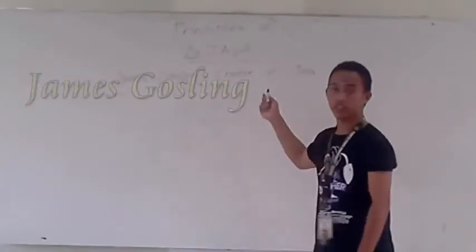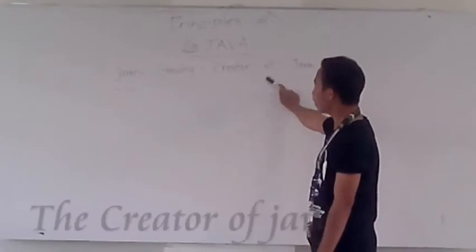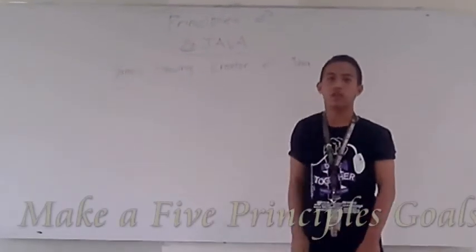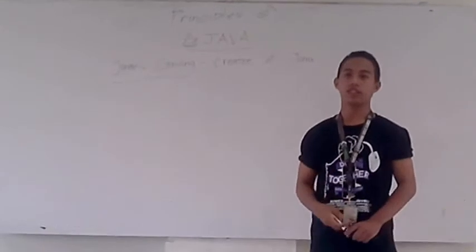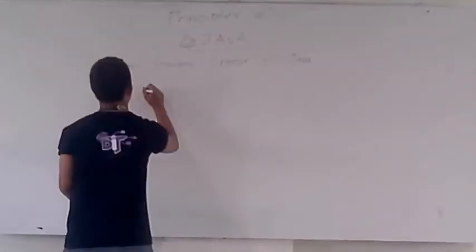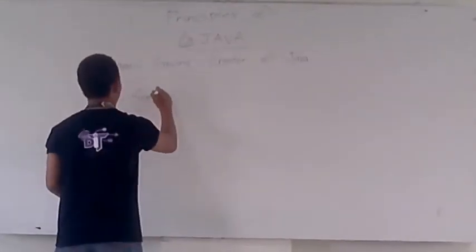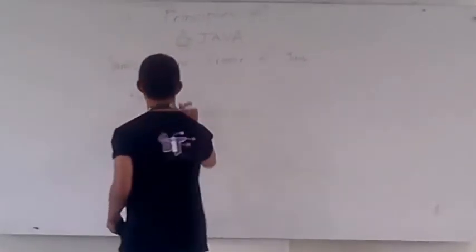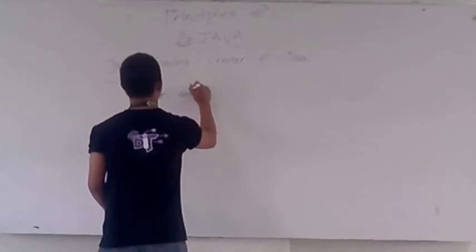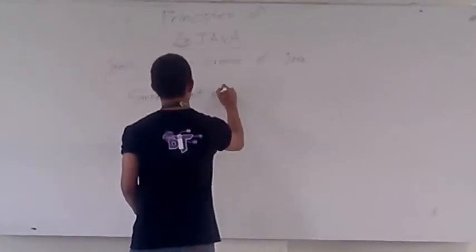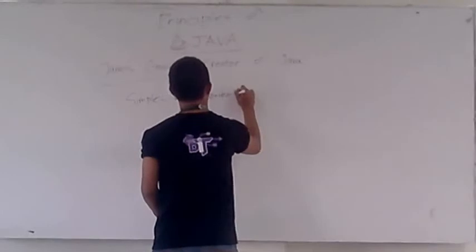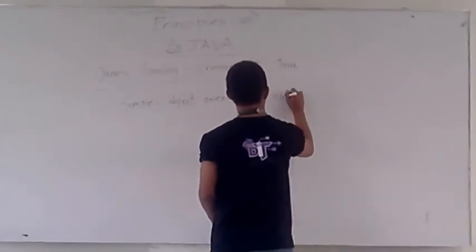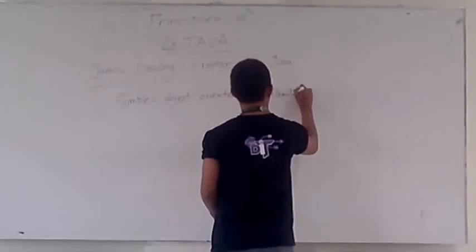The principles of Java. James Gosling, the creator of Java, set five goals for the Java language. First, it must be simple. Second, it must be object-oriented.